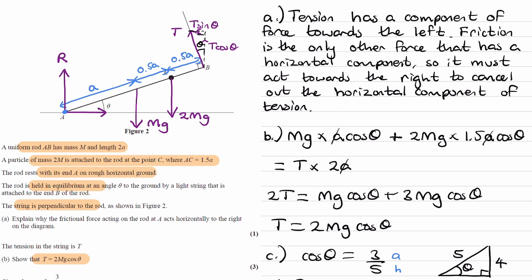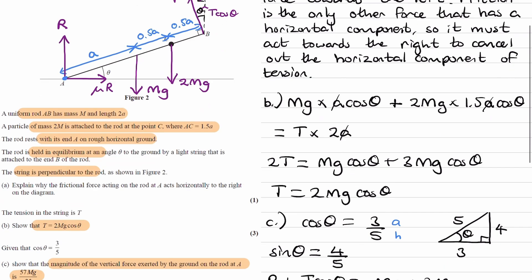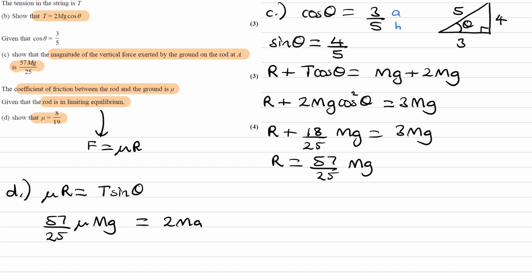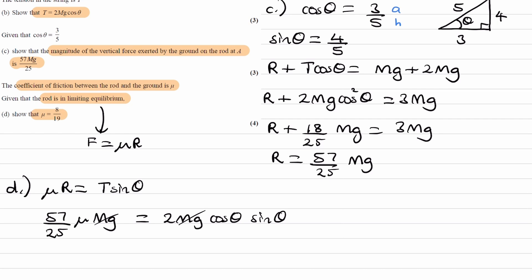That will help us work out the frictional force, because we know that mu R will be equal to T sin theta. Those are the two horizontal forces. So mu R is T sin theta. 57 over 25 mu mg, just replacing the R with this, is equal to T, which is 2mg cos theta, times sin theta. I'll cancel out the mg's first. This will be 57 over 25 mu is equal to 2 times cos theta times sin theta.